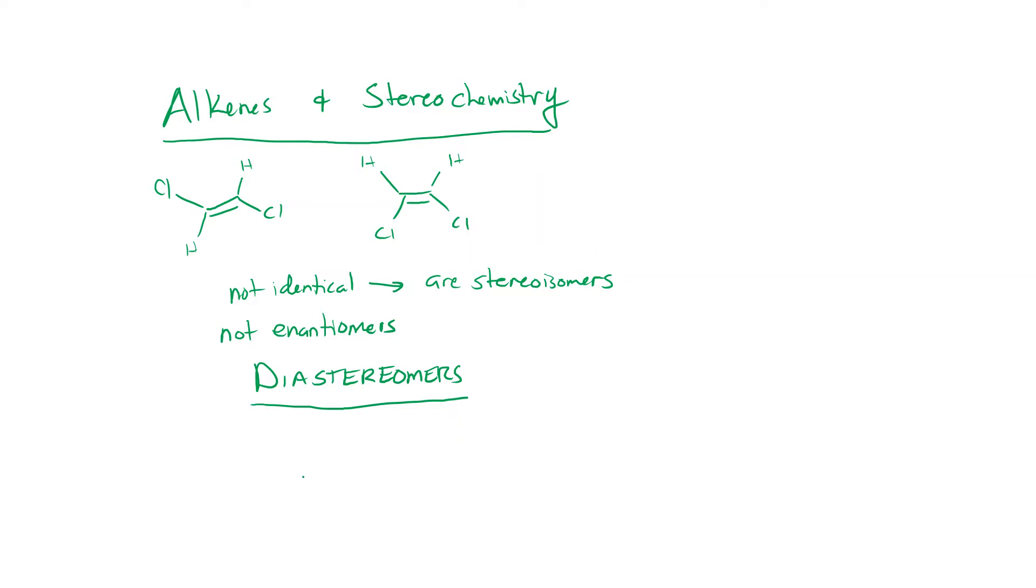So that means that we need to name them differently. We can't use R and S because there's no stereocenter to assign priority numbers and do all that kind of thing. So what we do is we look at the relationship between the non-hydrogen groups. In the first structure, we've got chlorine on this side, chlorine on this side. If we draw a line through the double bond, just bisecting the double bond, these chlorines are on opposite sides of each other. So this would be a trans double bond. This would be trans-1,2-dichloroethene.